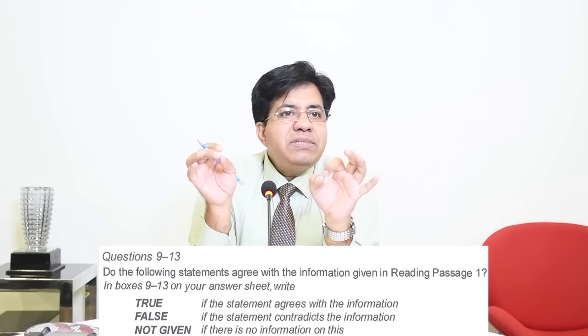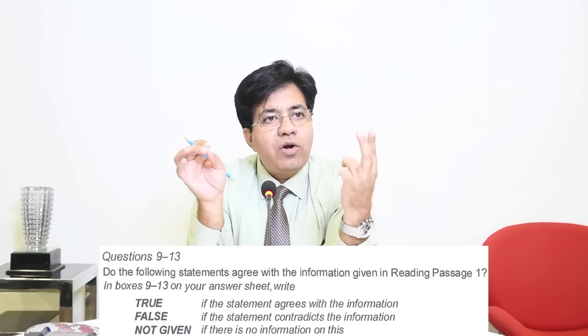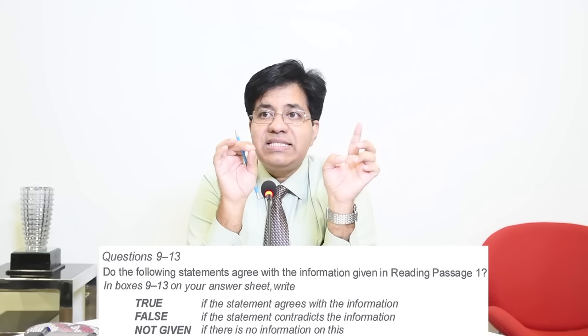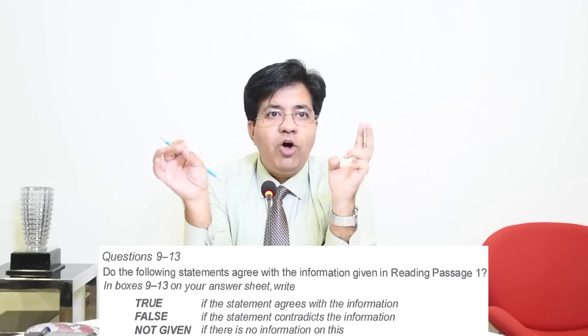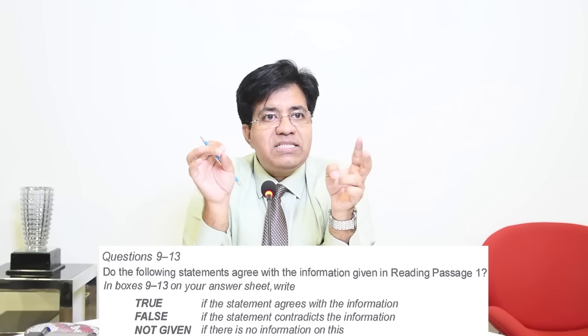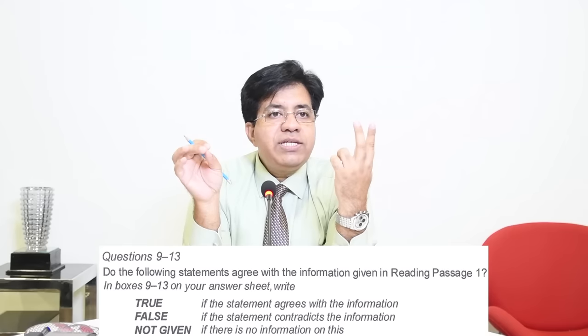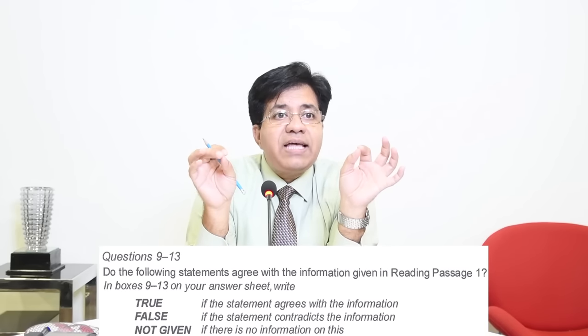In True, False, Not Given, sometimes there is a word or phrase that will decide whether the answer is True, False, or Not Given. If they use that phrase in the passage with different wording but the same meaning - synonyms - then it is True. If they use antonyms, the opposite, then the answer is False. And if they don't use any synonym or antonym, giving us no information, then the answer is Not Given. When you read the question, you need to immediately decide what you have to check, identify that key thing, check it, and then decide.